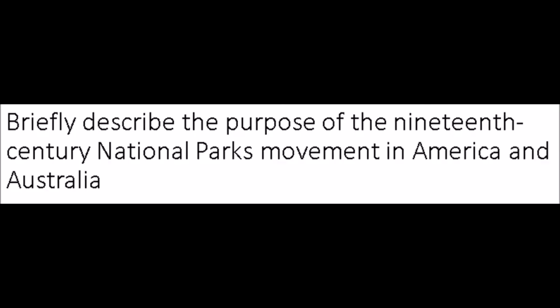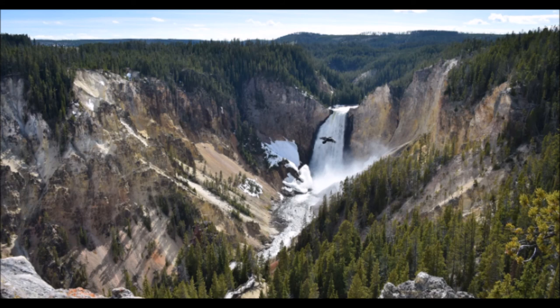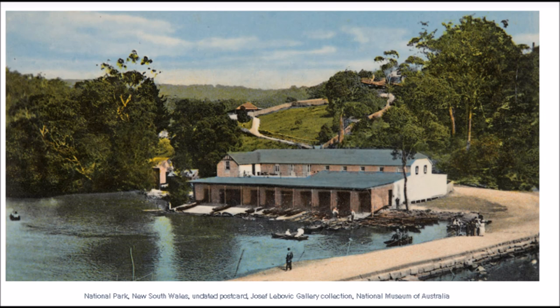Part 3. Briefly describe the purpose of the 19th century National Parks Movement in America and Australia. The National Parks Movement was kicked off in 1872 with the establishment of Yellowstone National Park. This was the world's first of its kind, and worldwide national parks began to appear. In 1901 to 1909, President Theodore Roosevelt protected 400 kilometres of forest, created five parks and 51 bird sanctuaries. The purpose of this was to preserve the natural wonders and protect wildlife. The first national park in Australia was established in 1879, and was later named the Royal National Park after a visit from the Queen in 1954. America set off a chain reaction with Yellowstone National Park and there are more than 500 national parks in Australia today.